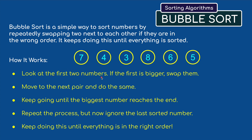Look at the first two numbers. If the first is bigger then swap them. So the seven and the four swap. Move to the next pair and do the same - so the seven and the three would swap. Keep doing this until the biggest number reaches the end. We're going to be swapping and swapping until the eight in this case reaches the end.